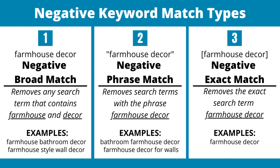Next is negative phrase match. This is going to remove the exact phrase "farmhouse decor" — you can see it has quotes around it — and remove search terms containing that phrase. Some examples would be bathroom farmhouse decor or farmhouse decor for walls. If I'm targeting the negative phrase match of farmhouse decor, it wouldn't remove search terms that don't contain that exact phrase.